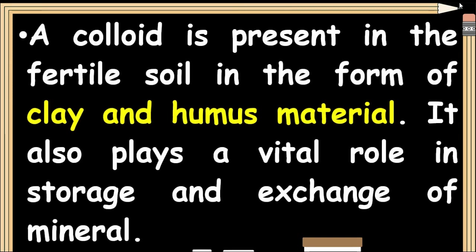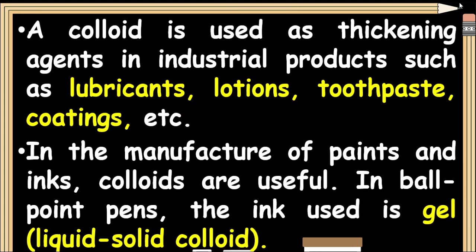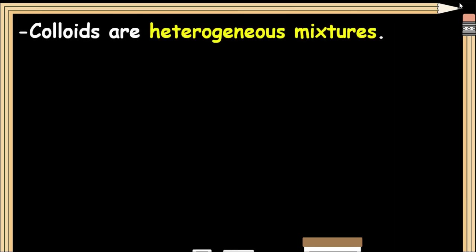A colloid is present in fertile soil in the form of clay and humus material, and plays a vital role in the storage and exchange of minerals. Colloids are used as thickening agents in industrial products such as lubricants, lotions, toothpaste, and coatings. In the manufacture of paints and inks, colloids are useful; in ballpoint pens, the ink used is a gel.